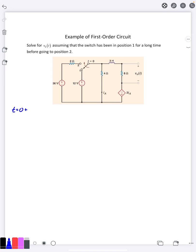So before the switch, we're in position one for a long time. That means we're in steady state, so we'll draw the circuit. And in this particular case we have an inductor. An inductor in steady state is a short. So this is our circuit here.